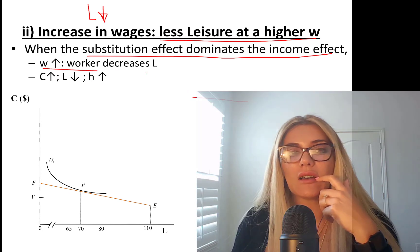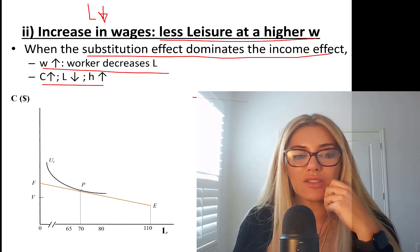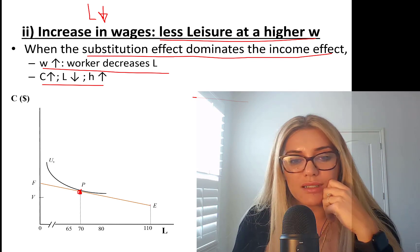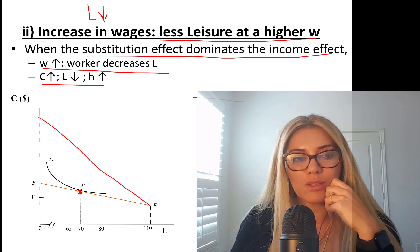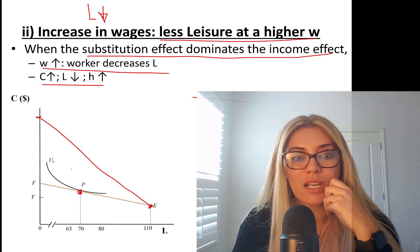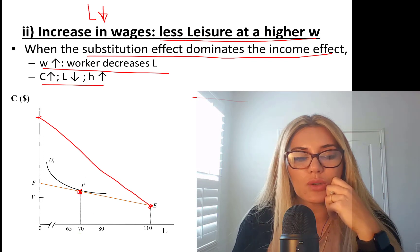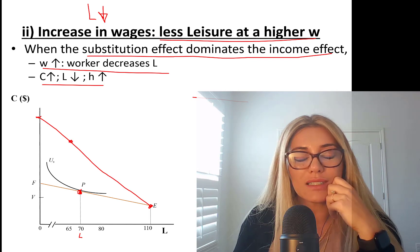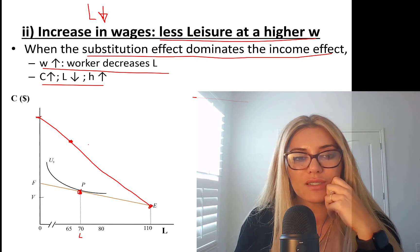Wages went up and the worker decreases leisure. The initial optimal point is point P. The budget line is going to swivel up, and this is the new budget line — the endowment point. Non-labor income didn't change. Initially leisure is 70, so you need to find a new equilibrium: the tangency point of this budget line with the indifference curve somewhere to the left.